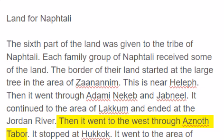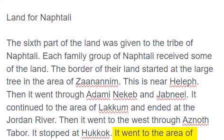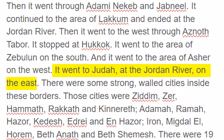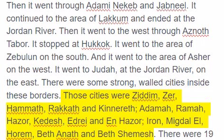Then it went to the west through Aznath-Tabor. It stopped at Hukok. It went to the area of Zebulun on the south, and it went to the area of Asher on the west. It went to Judah, at the Jordan River, on the east. There were some strong, walled cities inside these borders.